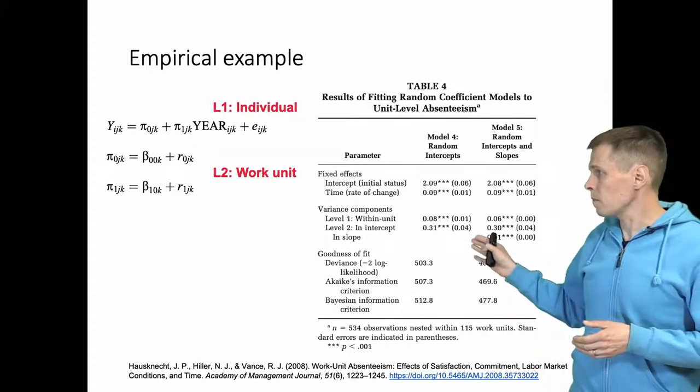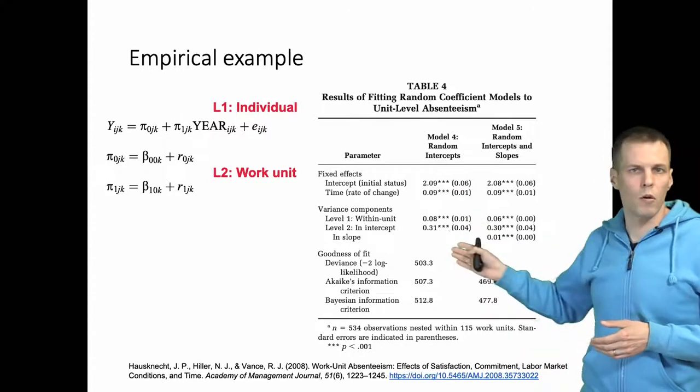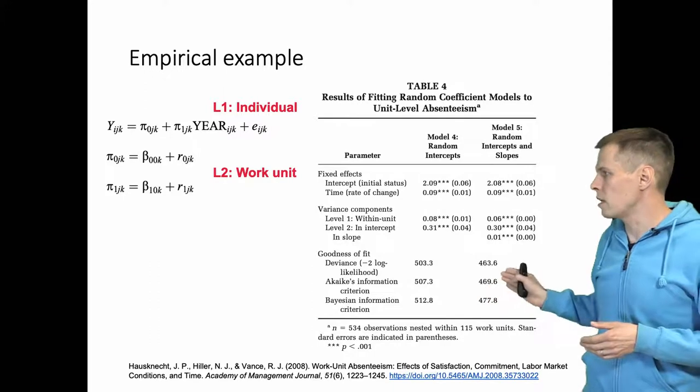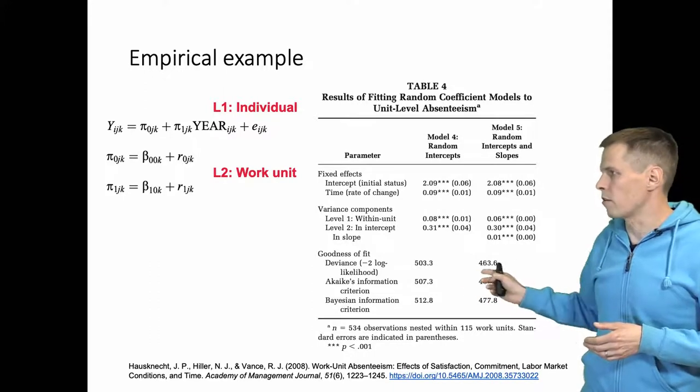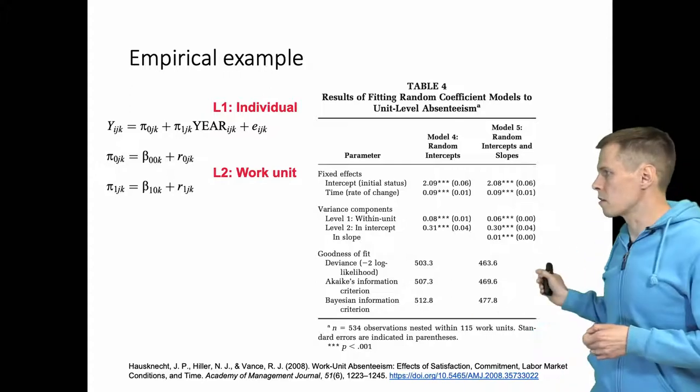This model has random intercepts and then random intercepts and slopes. We can compare the models and see that this model fits a lot better than that one because the deviance statistic is substantially smaller.